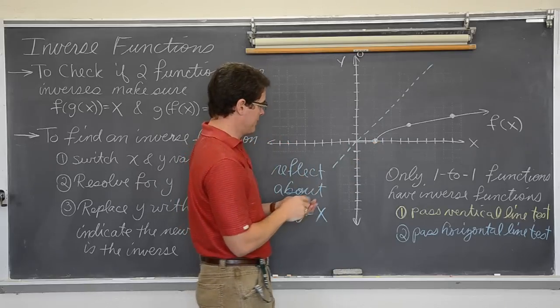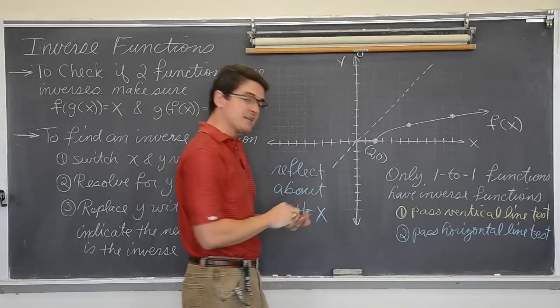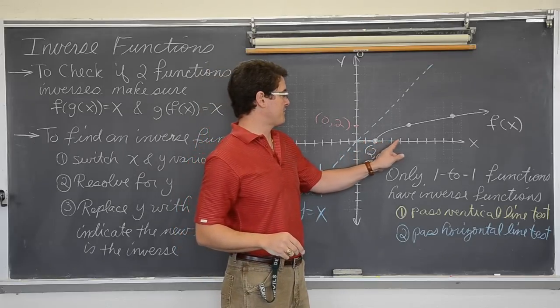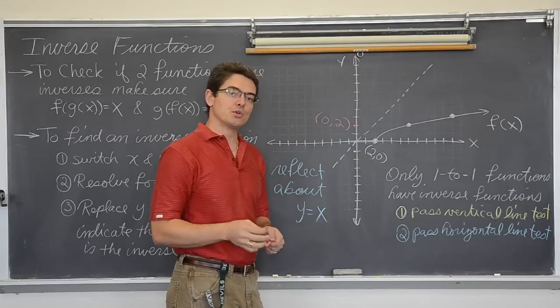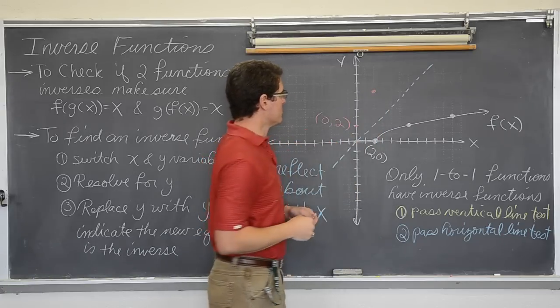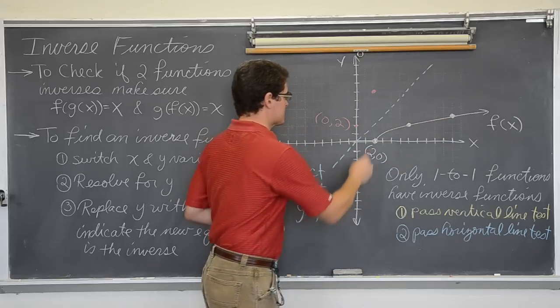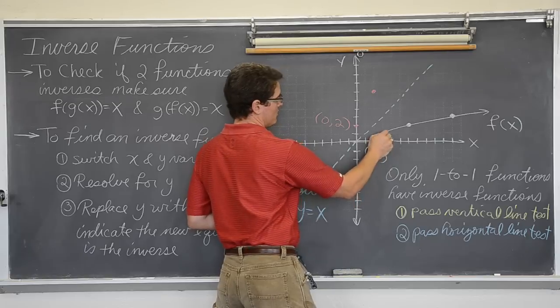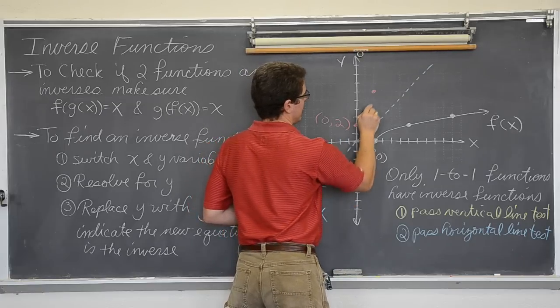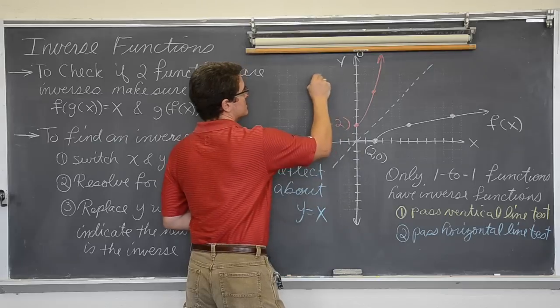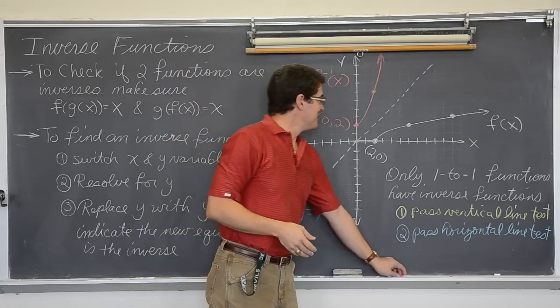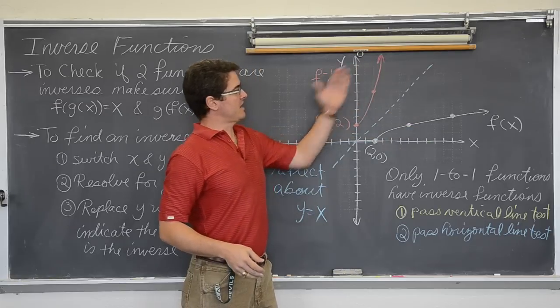So this point which was 2, 0 in my reflected graph is going to be 0, 2. My point that was 6, 2 is now going to become 2, 6. So you are also again just taking those x and y's and flipping them. And then finally my other one is 11, 3. So instead of 11, 3 it is going to be 3, 11. So let me just draw through the points that I do have. This red line is the inverse of f of x. So you take a graph, you reflect it around the line y equals x, and you get an inverse.